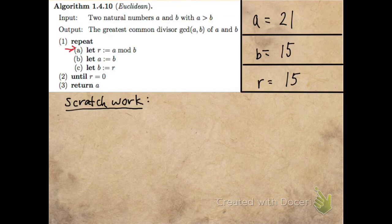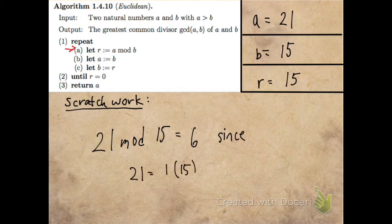Now I need to compute A mod B. So 21 mod 15, this is 6, since 21 is 1 times 15 plus 6. Right? 6 is the remainder.